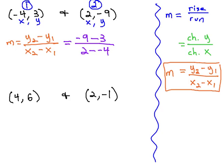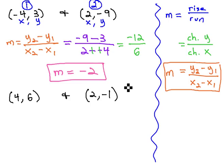Now, we simply have to combine the numerator, negative 9 minus 3 is negative 12. Subtracting the negative in the denominator is the same as adding a positive, 2 plus 4 is 6, and we get a fraction we can reduce to find the slope of these points is negative 2.